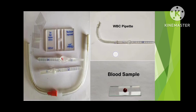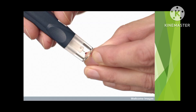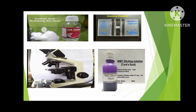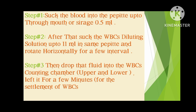This is the diagram of the WBC pipette, which is used to suck the blood from the sample. This is the WBC pipette, and this is a blood sample for the determination of WBCs. This is a lancet, which is used to collect the sample from the human body or any animal body. This is cotton and rubbing alcohol, used to clean the site of blood collection. This is a compound microscope, a WBC counting chamber, and a WBC diluting solution.